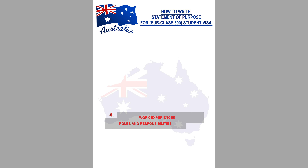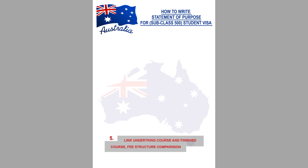On the fourth paragraph, if you have any work experience, you can mention it in detail, including the roles and responsibilities you took on. On the fifth paragraph, link the course you chose with your previous academic history and provide reasons for choosing that particular course. It's good to compare the fee structure and courses of different countries like the US, Canada, and others with Australia. You'll need to have solid points to prove that Australia is the best country for you to pursue your further education.